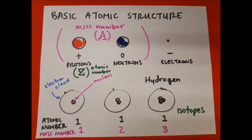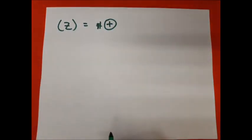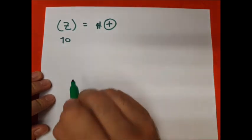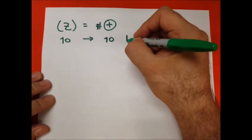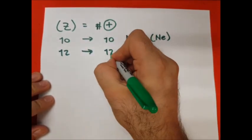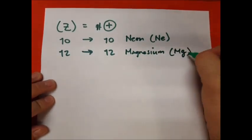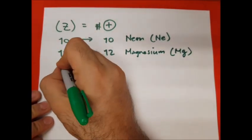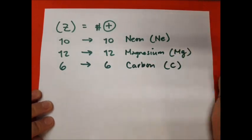When we're talking about atoms, atomic number — represented by letter Z — is equal to the number of protons. If I have atomic number 10, I automatically have 10 protons, which gives a specific identity. The only element on the periodic table with 10 protons is neon, symbol Ne. If I have 12, that means 12 protons — atomic number 12 — which is magnesium, symbol Mg. Another example: atomic number 6 means 6 protons and carbon, symbol C.